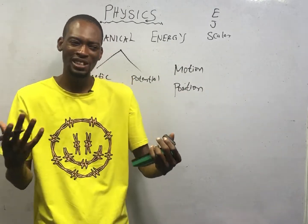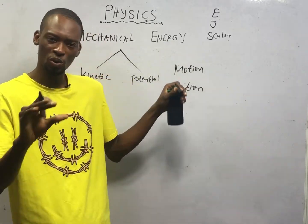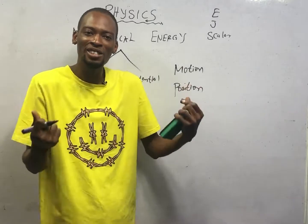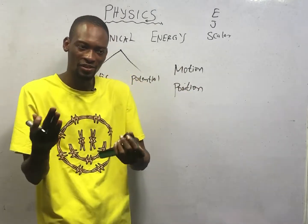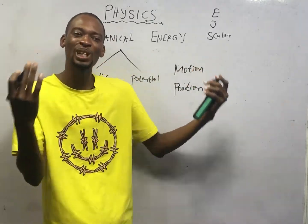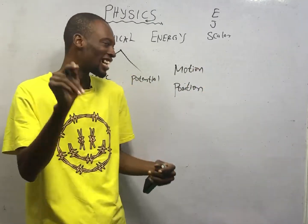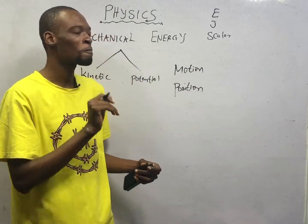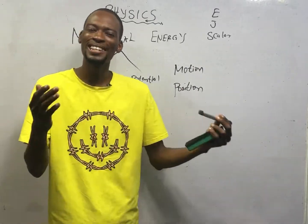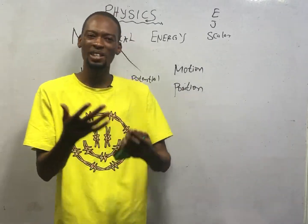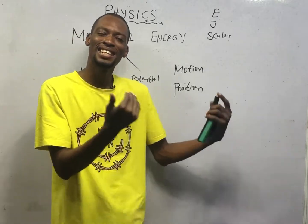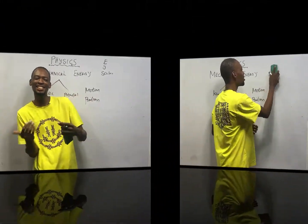The opposite of scalar quantities are vector quantities — quantities that have magnitude and direction. Examples include force, velocity, and acceleration. And energy can be in different forms: electrical energy, mechanical energy, solar energy, heat energy.